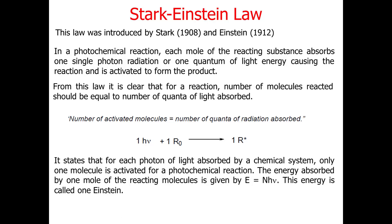From the Stark-Einstein law, it states that each photon of light absorbed by a chemical system activates only one molecule for a photochemical reaction. Therefore, the energy absorbed by one mole of the reacting molecules is given mathematically as E = N × H × ν. This energy is called 1 Einstein, where N is Avogadro's number (6.023 × 10²³ mol⁻¹), H is Planck's constant, and ν is the frequency of light absorbed.